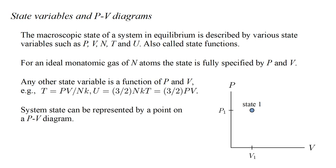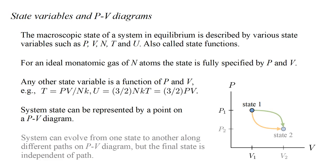Therefore, the state of a system is completely represented by a point on a PV diagram. For example, all properties of, let's say, state one of the system are fixed by the corresponding pressure P one and volume V one. The system can evolve from one state to another along different paths on the PV diagram, but the final state, say state two, is independent of the path. It depends only on the final pressure P two and volume V two.